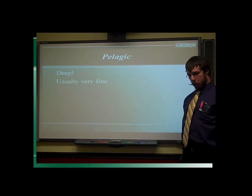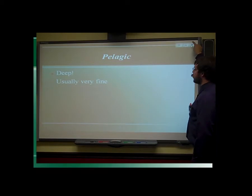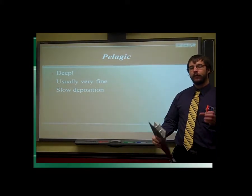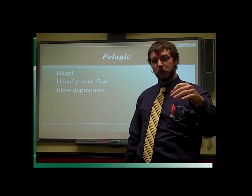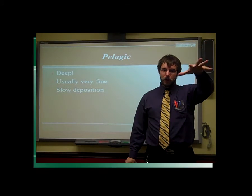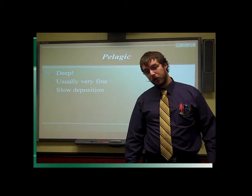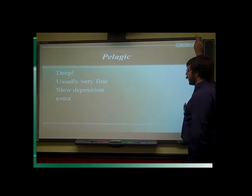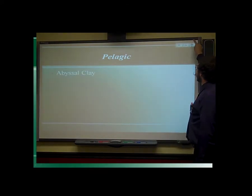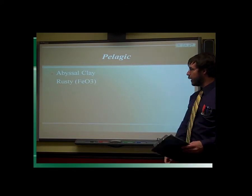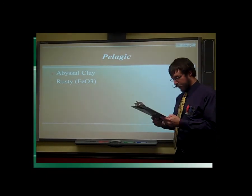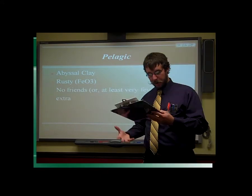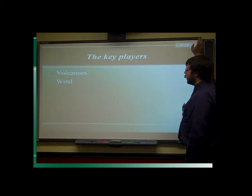Pelagic sediments are big and huge in extent. They usually tend to be very fine because they've traveled a far distance, so they didn't take that much energy to keep pushing them. As a result of their fine size, they take a long while to settle through the ocean. Salt water is relatively dense, so it's going to take a little while for these things to get through. Some examples of pelagic sediments are abyssal clay. They tend to be very rusty in color because they've got a lot of iron oxide — which is rust. Those are really the only type we call abyssal clays.